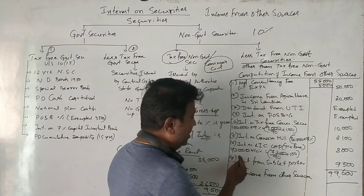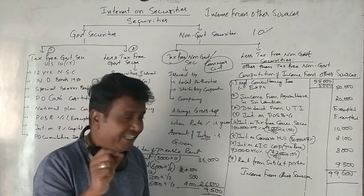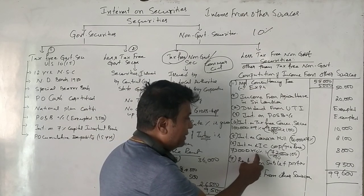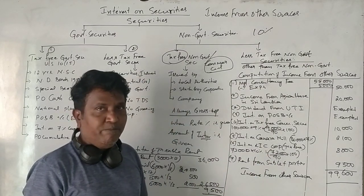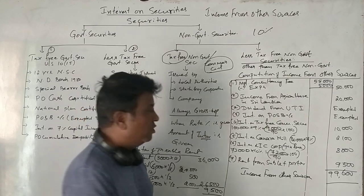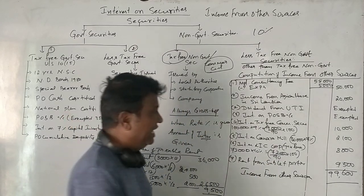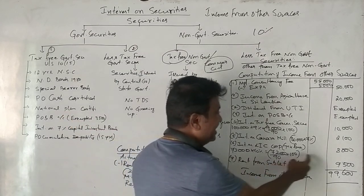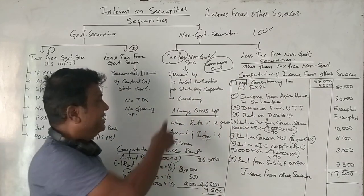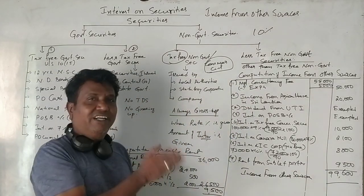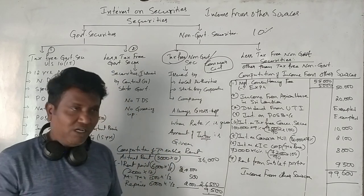The total investment is ₹72,000 and the 10% interest gives ₹7,200. The tax grossed-up amount comes to ₹8,000 on the ₹90,000 base. We always need to gross up the net amount to arrive at the gross figure.